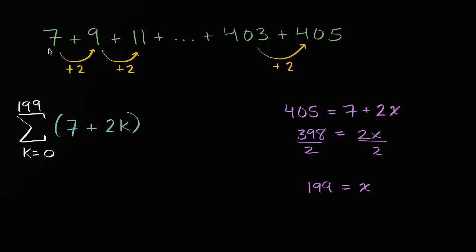When k equals 0, this is going to be 7. When k equals 1, it's 7 + 2 times 1, which is going to be 9. When k equals 2, it's going to be 7 + 2 times 2, which is 11. And all the way, when k equals 199, it's going to be 7 + 2 times 199, which is 398, which would be 405. So that's one way that we could write it.